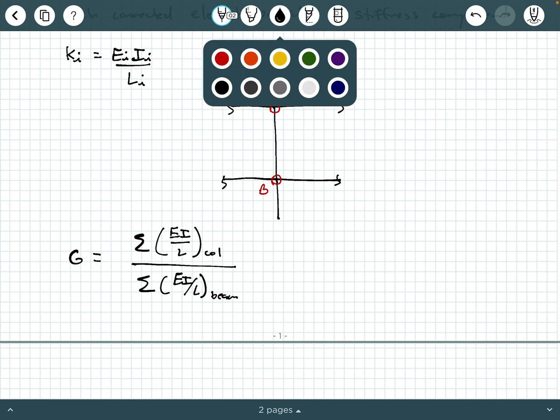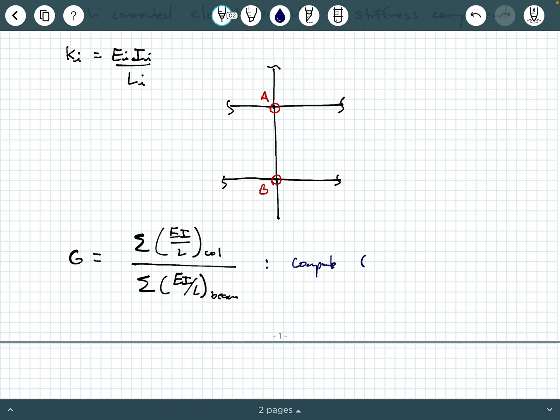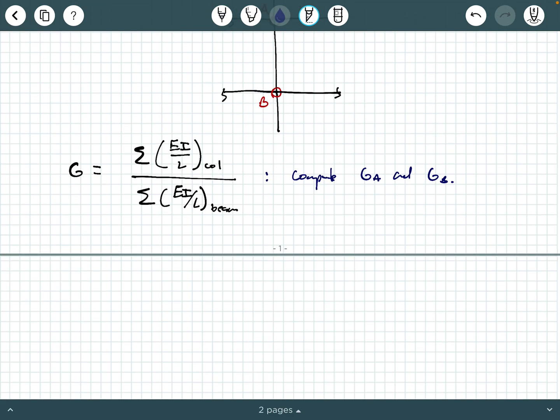We're going to say compute a GA and a GB. So you're going to evaluate this type of equation for point A and point B. So for example, at point A, you're going to sum up the stiffnesses of the two columns connected at A, and then divided by the stiffnesses of the two beams that are connected at A. Then you're going to do a similar thing for B. You're going to sum up the stiffnesses of the two columns attached at B, divided by the sum of the stiffnesses of the two beams attached at B.